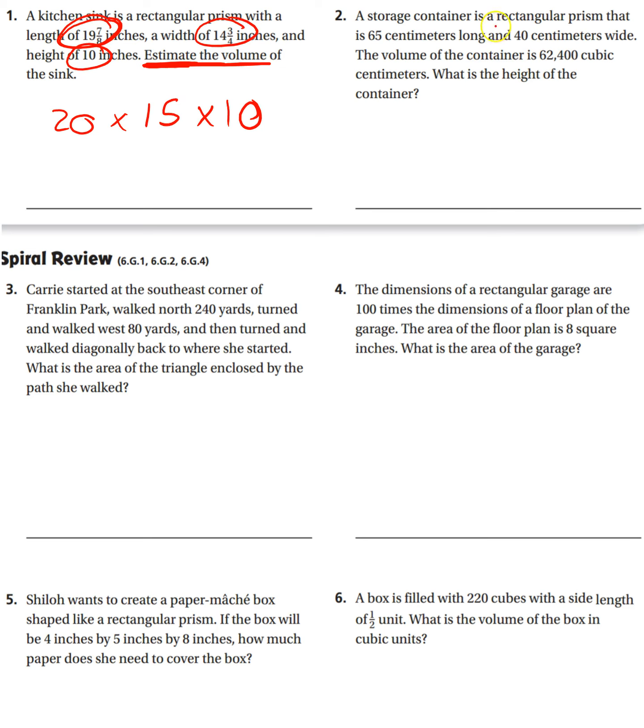Okay, number 2. A storage container is a rectangular prism that is 65 centimeters long, 40 centimeters wide, with a volume of 62,400. So this time they gave us the volume. Remember our formula is volume equals length times width times height. They gave us the volume, V, 62,400, and then they gave us 65 times 40 times, and we don't know the height.